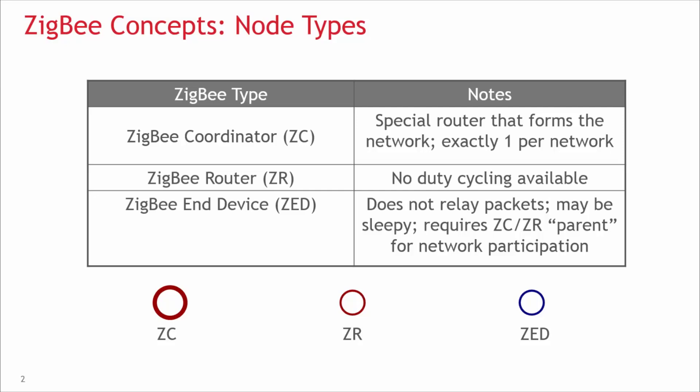In diagrams and other Silicon Labs Zigbee training videos, you may see circles of different types. The thick red circle corresponds to the coordinator, the thinner red circle corresponds to the router, and a blue circle represents an end device.